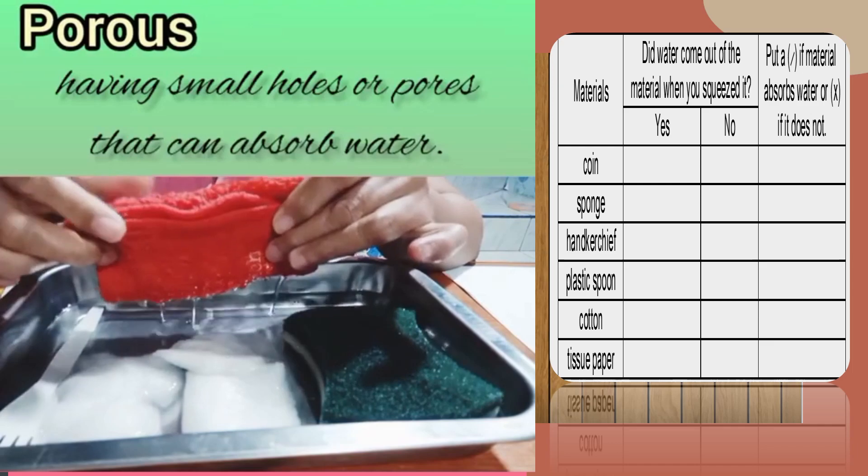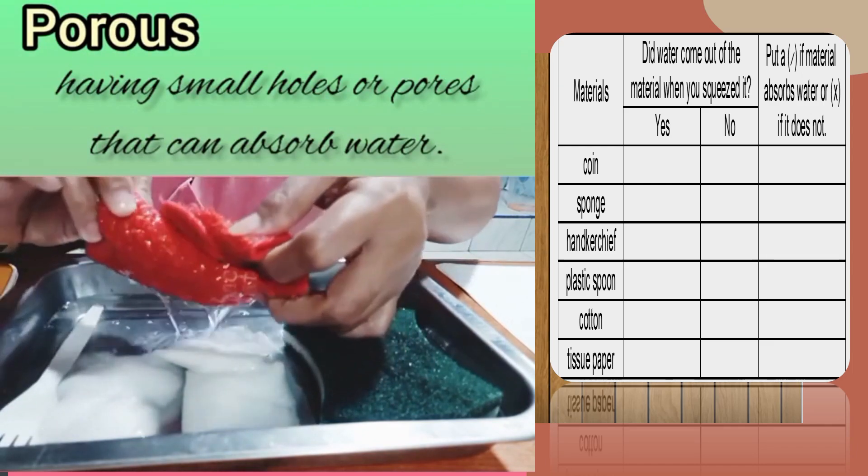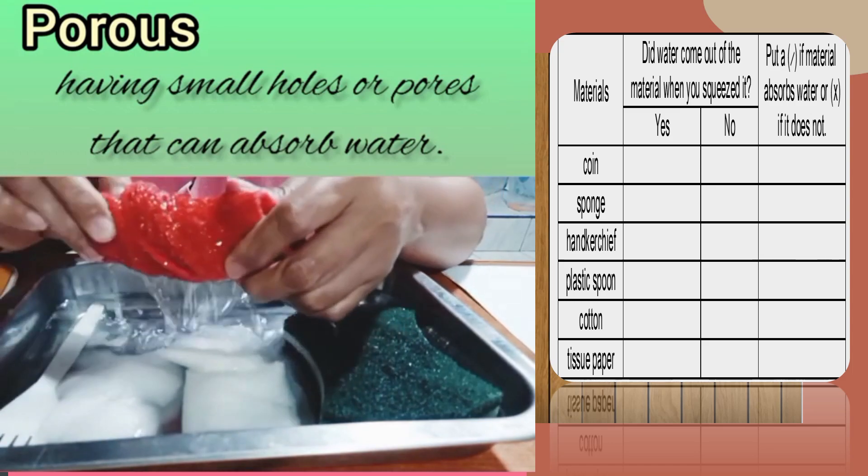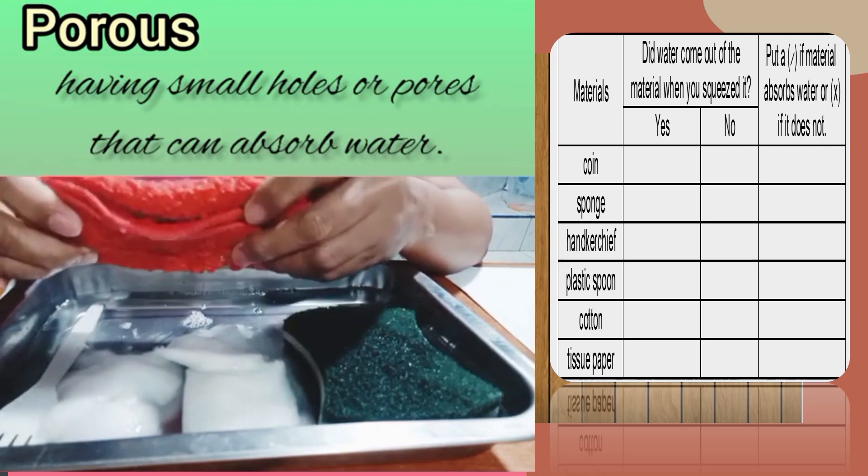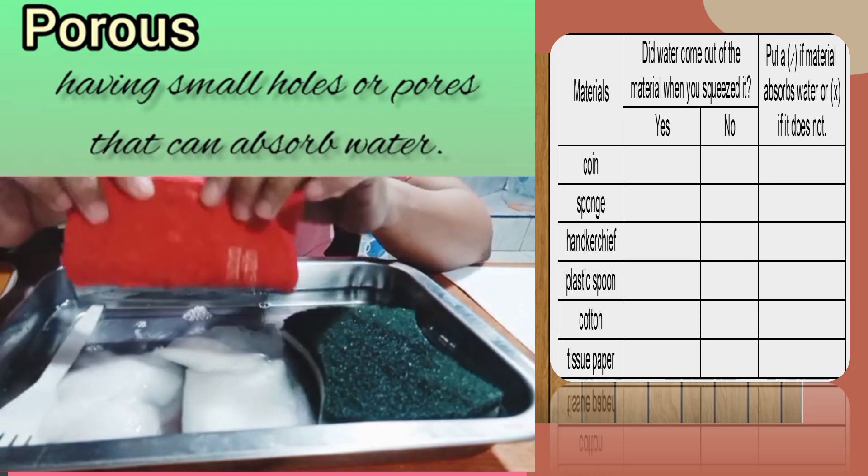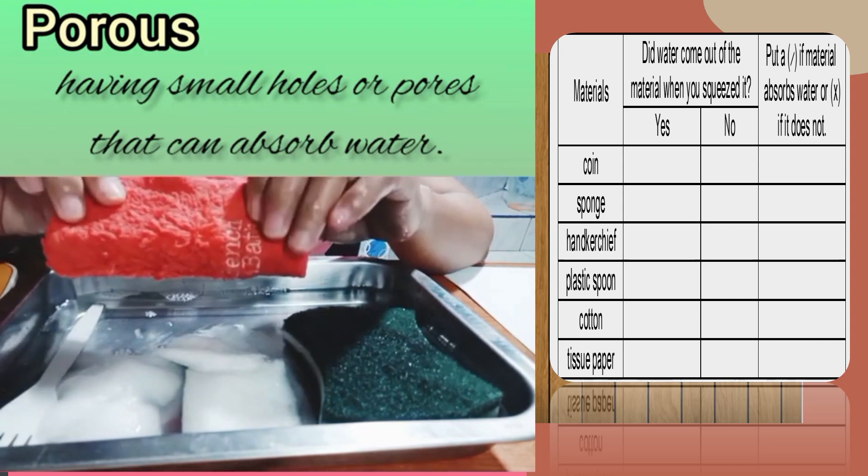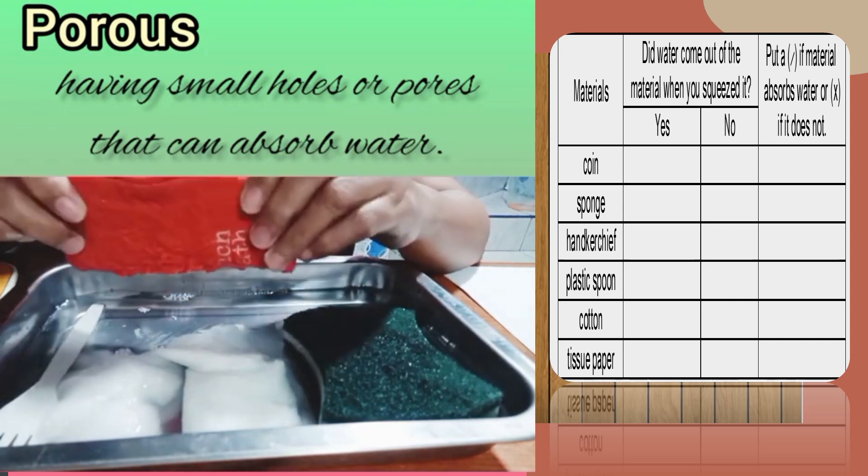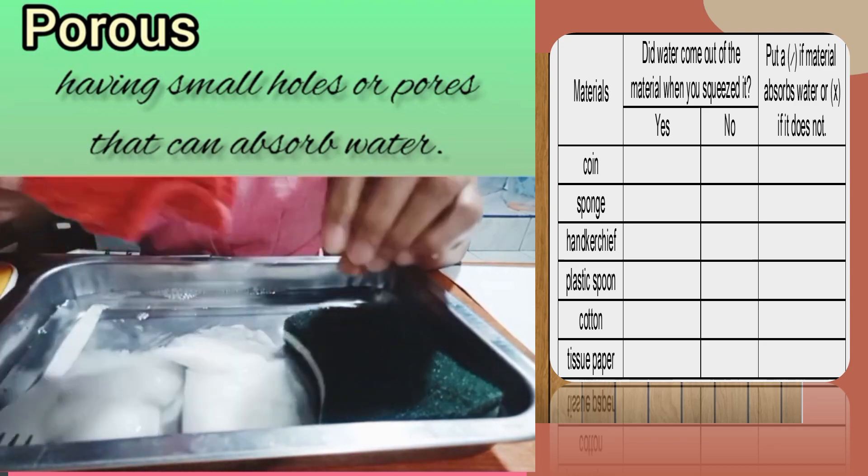Okay, let's lift it up one by one. First is this towel. Wow, it is quite heavier than before. When I squeeze it, water came out of it. It means class that this towel absorbs water. This is porous material. Porous materials are materials having small holes that allow water or air to pass through it.